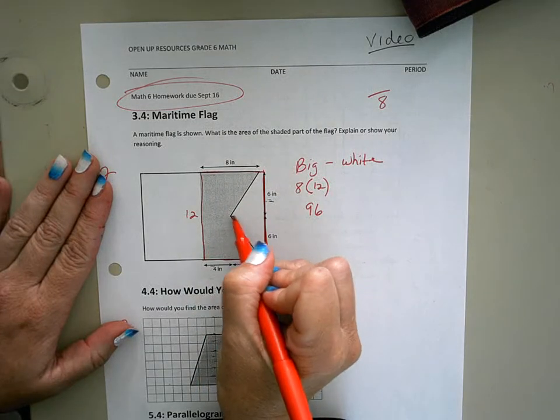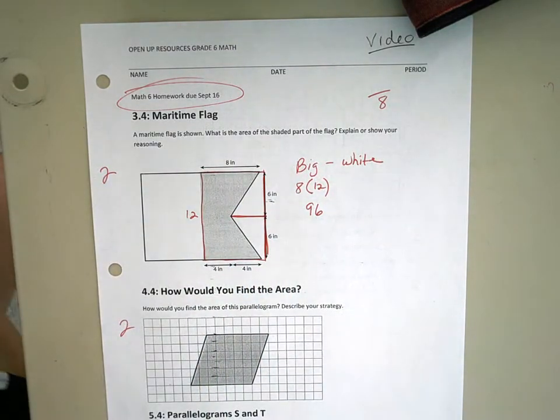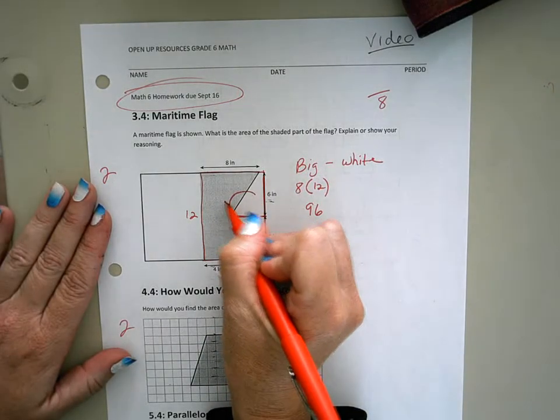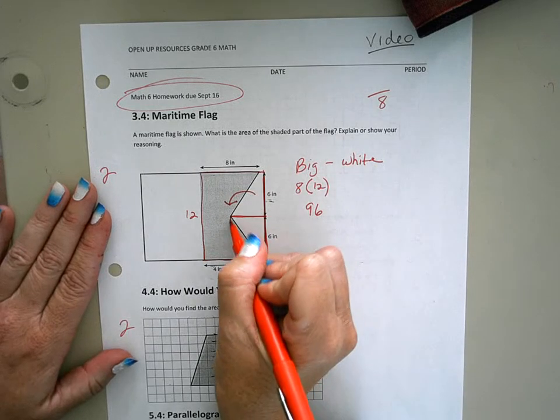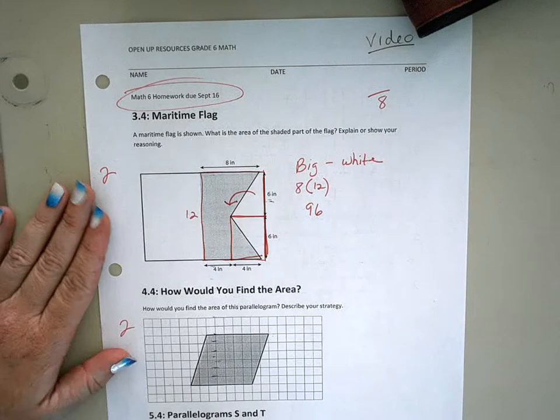To do that, what I'm going to do is I'm going to do that decomposing strategy that you all are so amazing with. It's been really fun to watch. So I'm going to decompose this triangle and I'm going to rearrange it and bring it down here. I'm just cutting it off and bringing it down here.